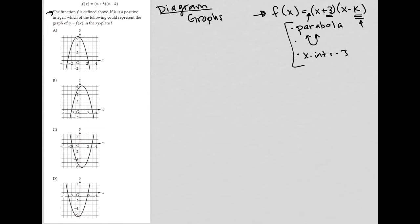First of all, we know it's a parabola. All the answer choices are parabolas. Second of all, we know that it must face upward, which means that answer choice A and B are gone. Thirdly, we know that we want an x-intercept of negative three, and we only see that in answer choice D, which makes answer choice D the correct answer.